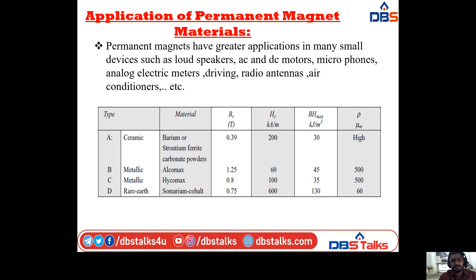For type C metallic — Icomax — the values of Br, Hc, and BH maximum are 0.8, 100, and 335, with relative permeability 500. For type D, rare earth — Samarium Cobalt — the values of Br, Hc, BH maximum, and relative permeability are 0.75, 600, 130, and 60 respectively.